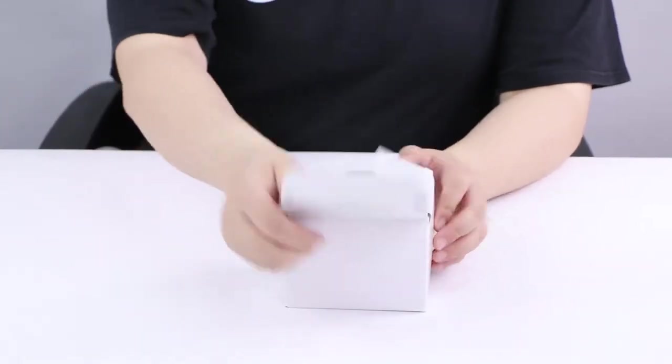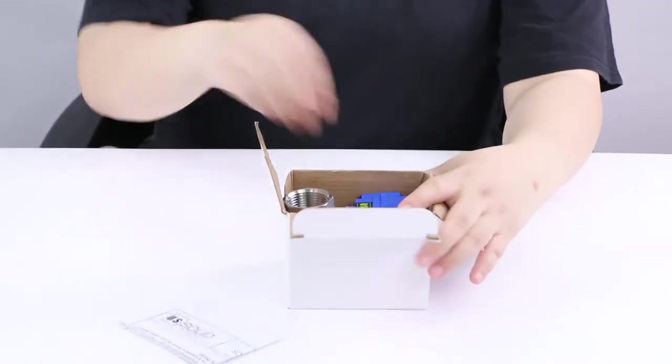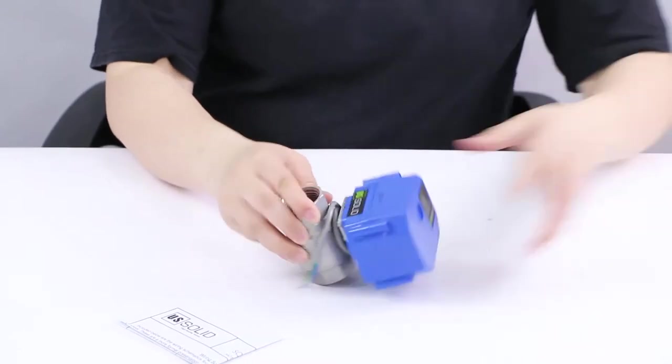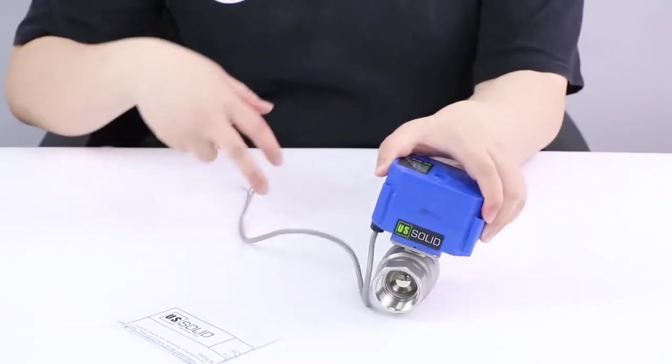Welcome to UI Solid. Today we will show you how to wire a motorized ball valve with 5 wire, which can be used with indicator lights.